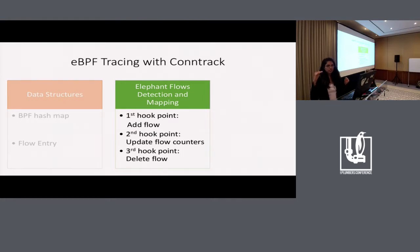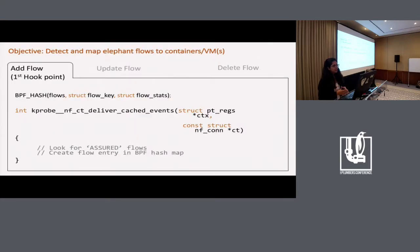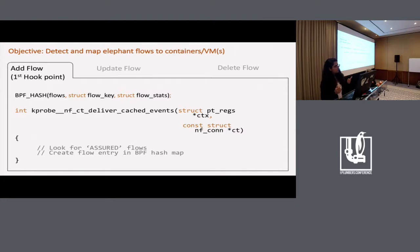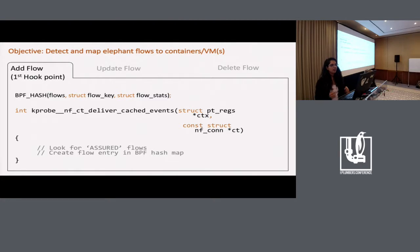Let's step through the different hook points added in conntrack. The first hook point executes when a new flow-related event happens — we trace calls to the conntrack function that delivers cached events. We use this rather than a simple add-to-hash-map function because we want to track flows that are committed and only look for flows that are assured — conntrack defines an assured flow as one that has seen traffic in both directions, helping filter out stray traffic. In this routine, we create a flow entry in the BPF hash map.